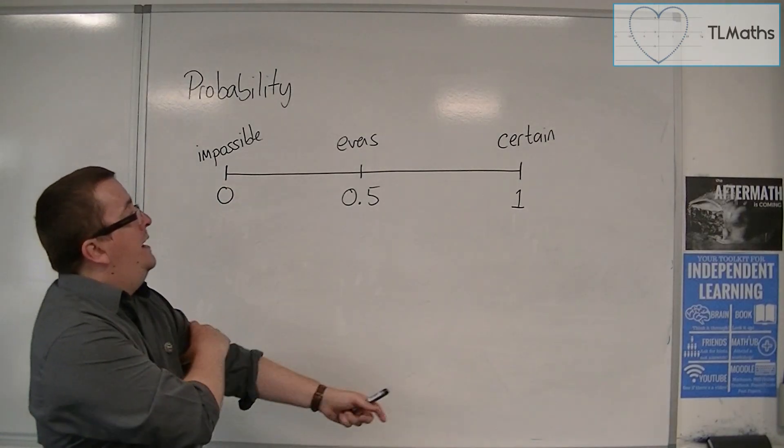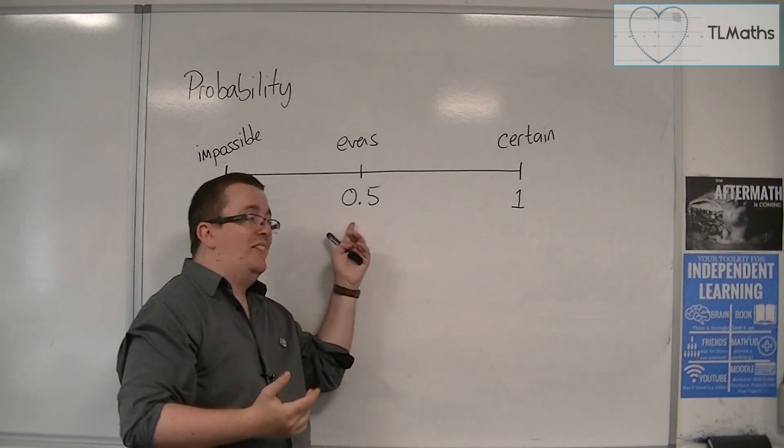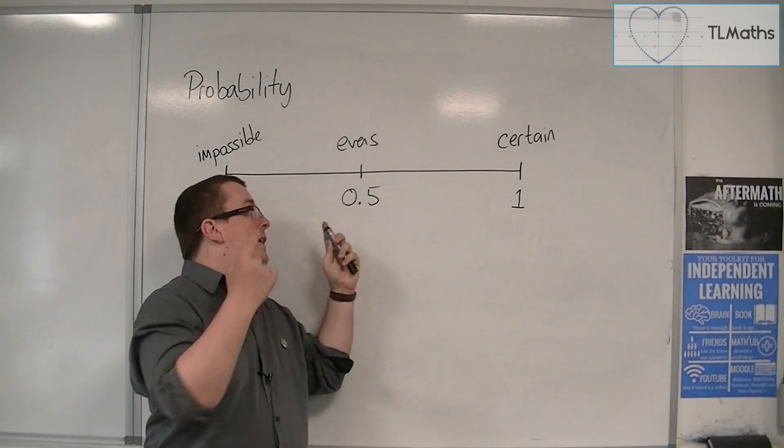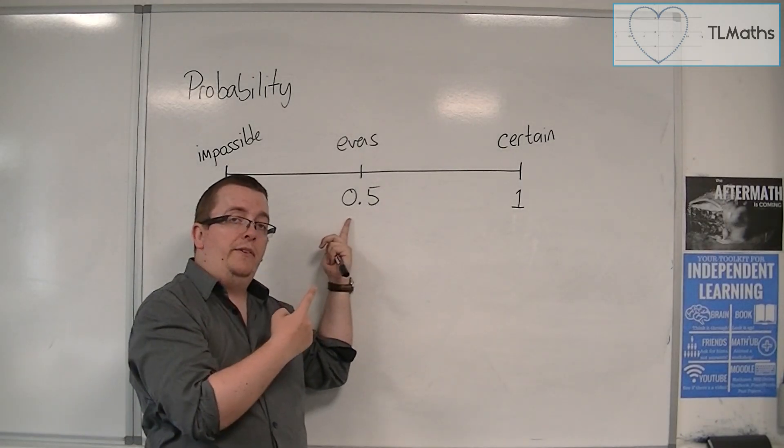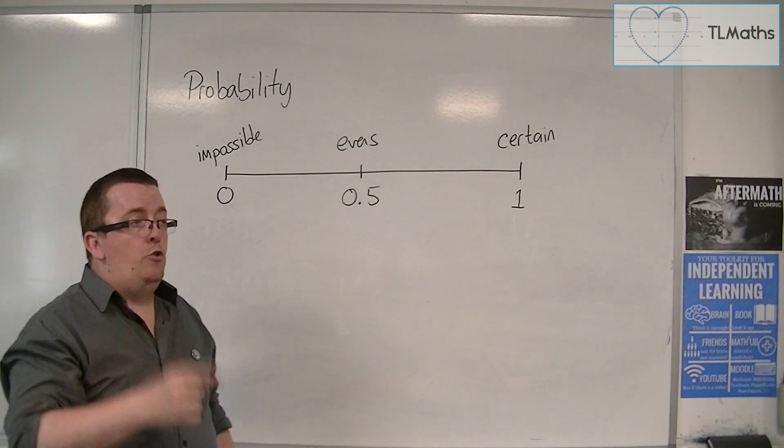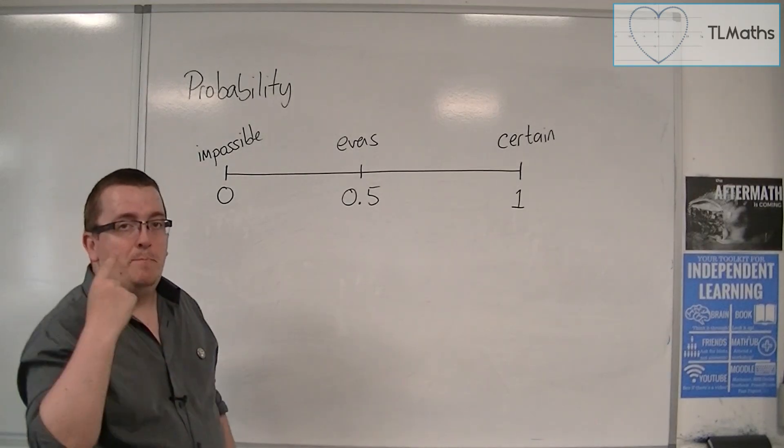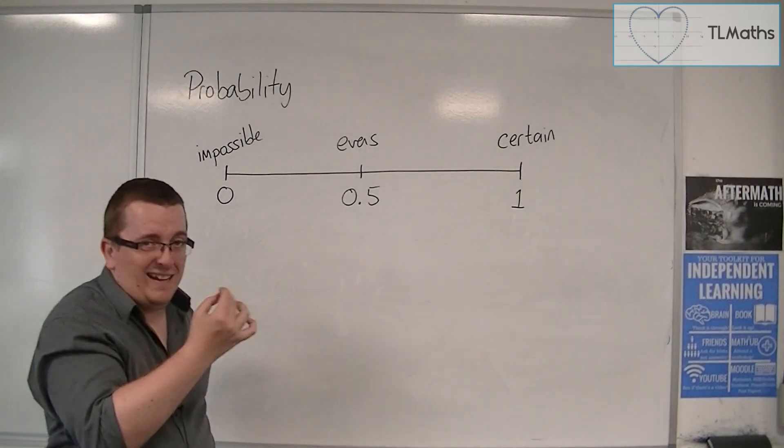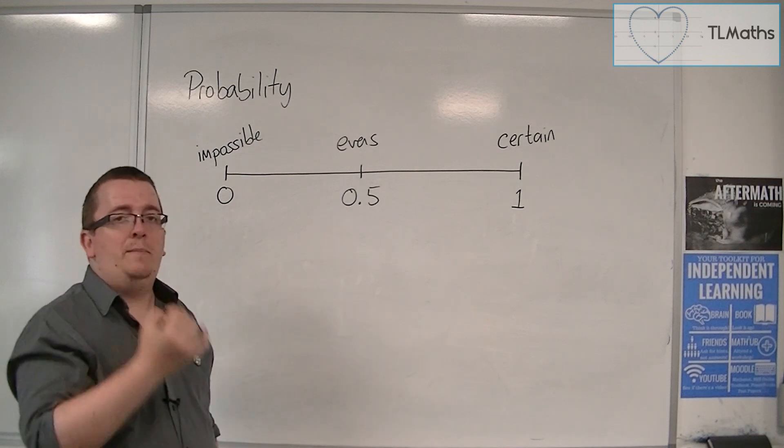Now, in the real world, nothing can be exactly fair and one-half probability. No coin is perfectly balanced down to the atom.